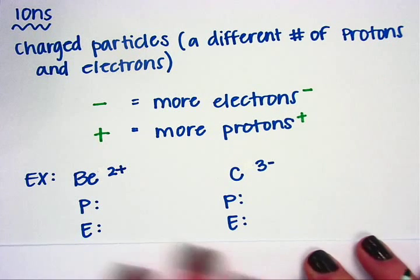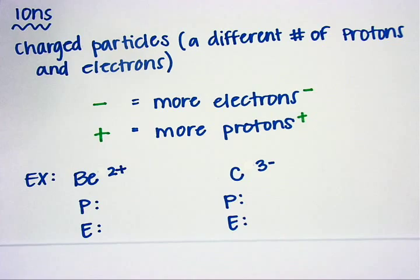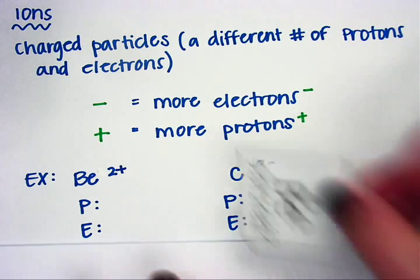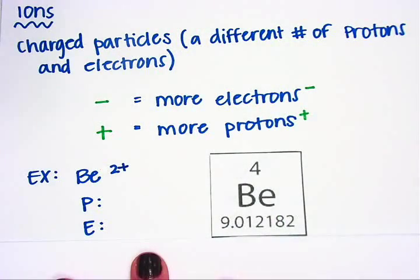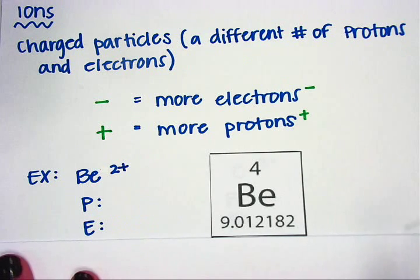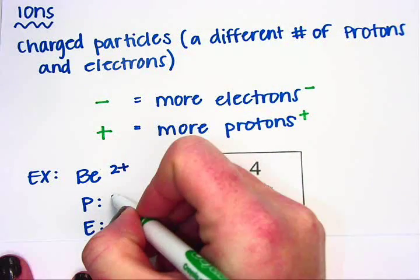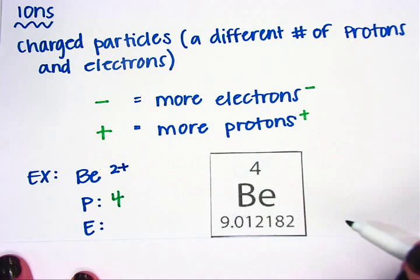Now a couple of examples. I have beryllium with a +2 charge, and I want to find its number of protons and electrons. The first thing I need to know is how many protons beryllium has in the first place. Looking at the element, the number 4 up here represents the number of protons, so that will be 4.